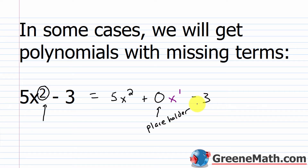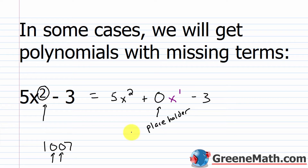For example, in a number like 1,007, these zeros are just placeholders — they're telling me that I have 0 hundreds and 0 tens. It is the same thing here: I have 0x to the first power, so the 0 is just nothing more than a placeholder.